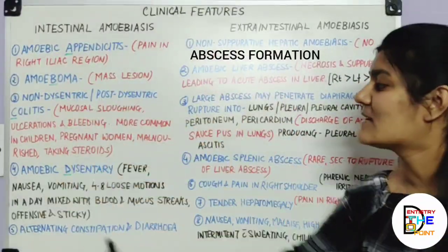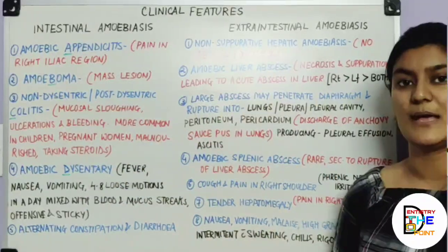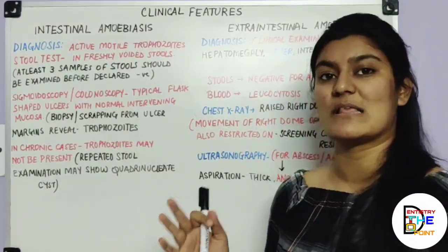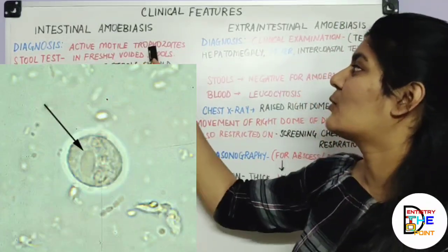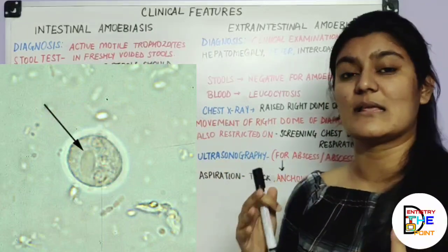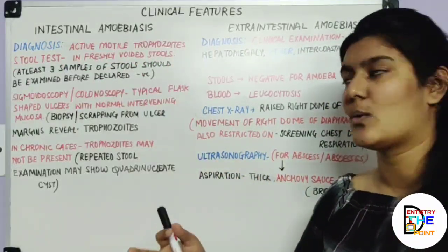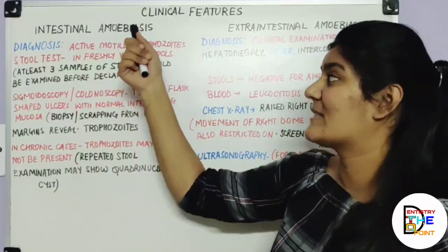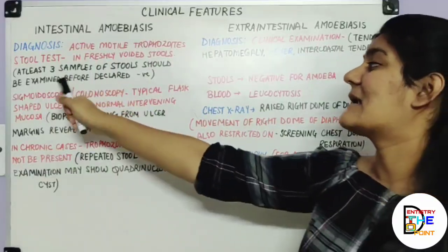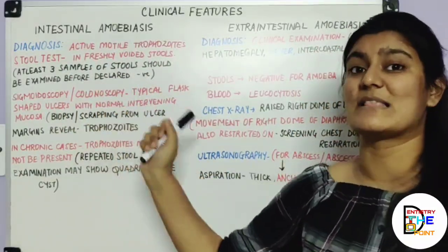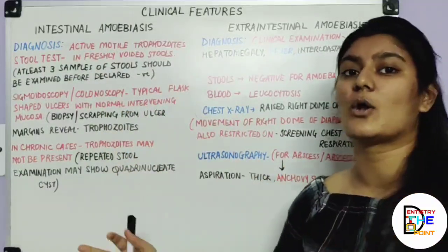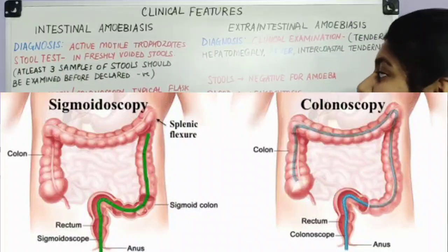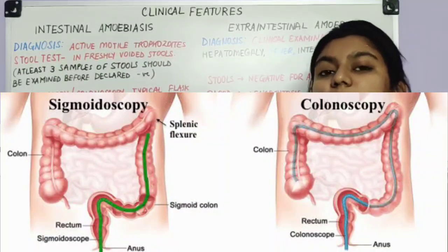Moving to the diagnosis of intestinal amoebiasis. In the active or acute form, freshly voided stools will show active motile trophozoites on stool examination. At least three stool samples must be examined before declaring a patient negative — a single stool sample is not sufficient. If sigmoidoscopy or colonoscopy is performed, the characteristic flask-shaped ulcers with normal intervening mucosa caused by Entamoeba histolytica will be seen.